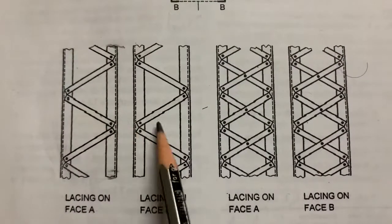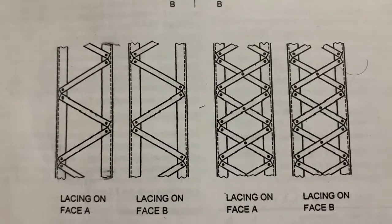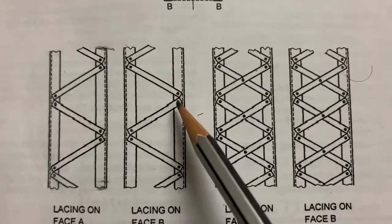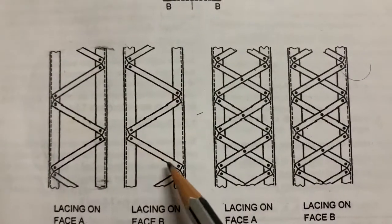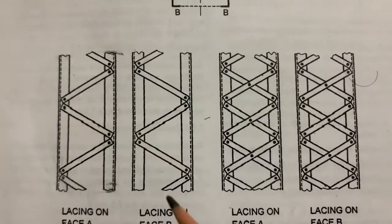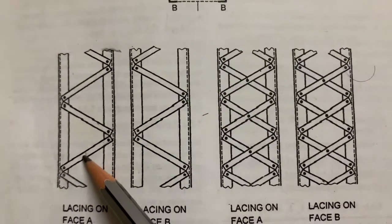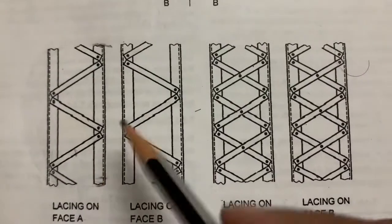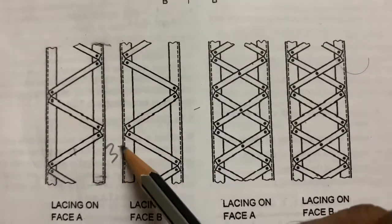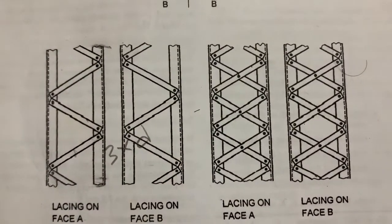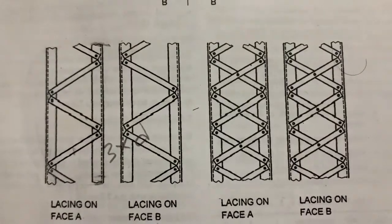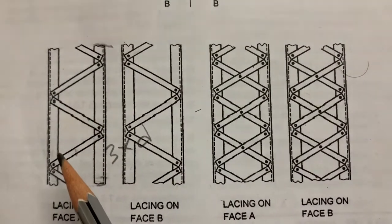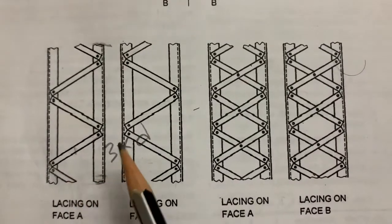The third specification: in bolted or riveted connections, the minimum width of the lacing bar should be at least three times the diameter of the bolt or rivet.